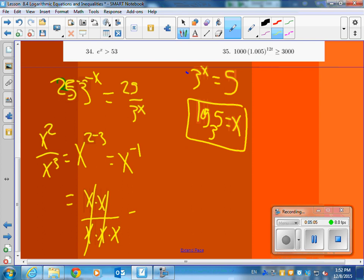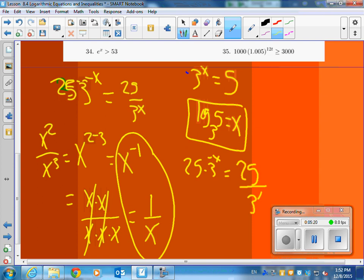Now if we look at this analytically, it's x times x over x times x times x. These cancel out and I get 1 over x. So that's why those are the same. So if you had 25, 3 to the negative x, that's the same as 25 over 3 to the x.